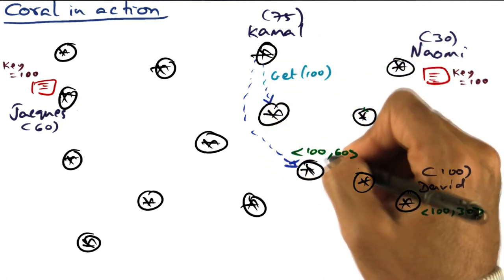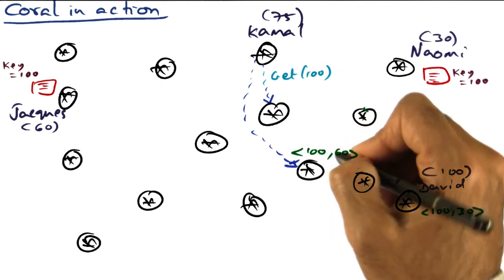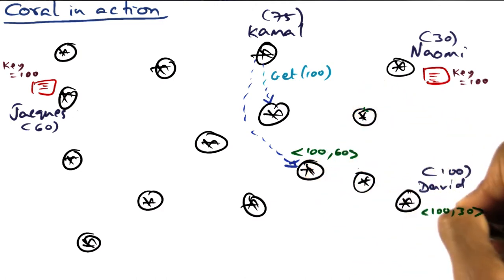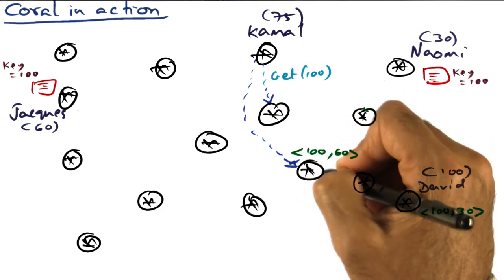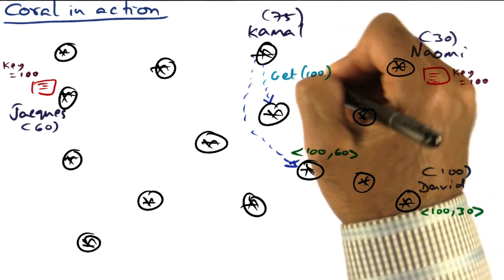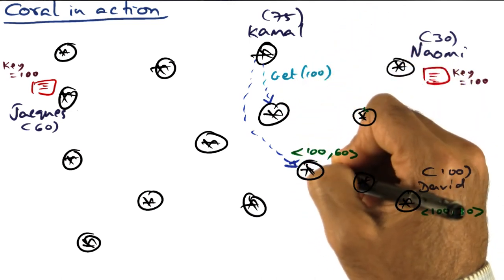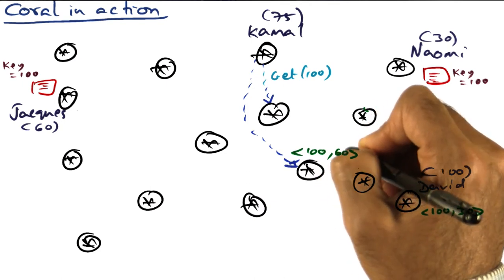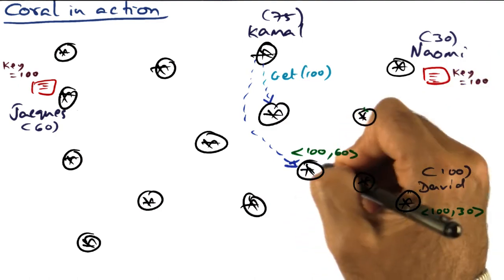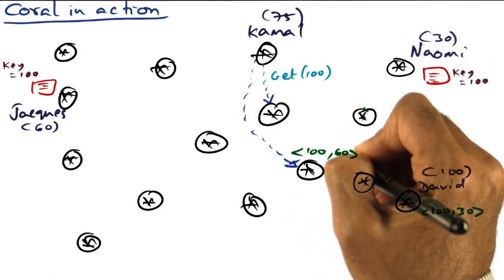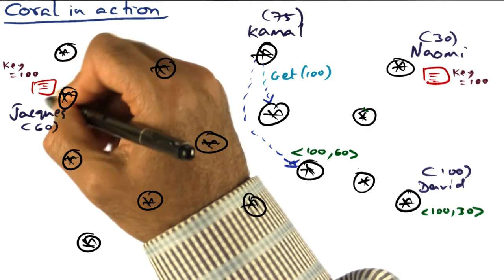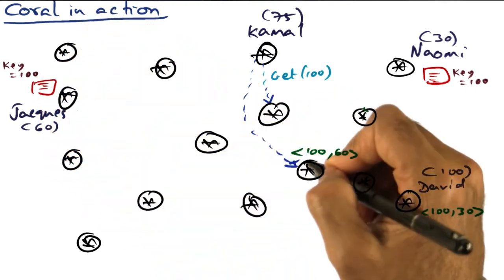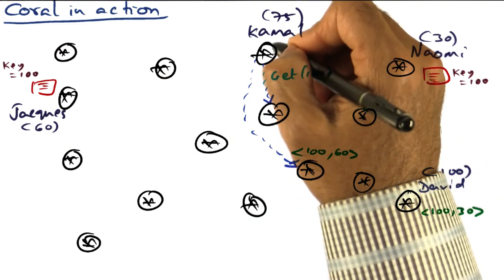And this guy says, you know what? I've got the key that you're looking for. And the value that is associated with this key is 60. So Kamal doesn't have to go all the way to this metadata server. He can get the answer for his query, get 100 from this intermediate node itself, which returns a different value, different from Naomi's address. Namely, node ID 60 that corresponds to the new Good Samaritan, Jacques, who is also willing to serve as a proxy for the same video content.